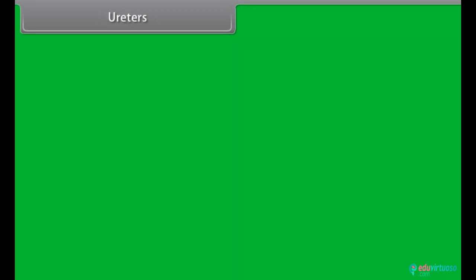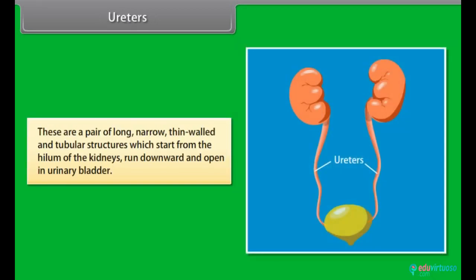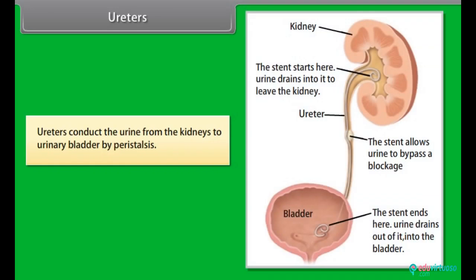Ureters are a pair of long, narrow, thin-walled tubular structures which start from the hilum of the kidneys, run downward, and open into the urinary bladder. Ureters conduct urine from the kidneys to the urinary bladder by peristalsis.